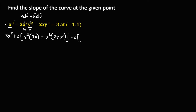Then minus 2 times the derivative of x — this one is u — and y to the power 3, this one is v. So using this formula, we have v, that's y to the power 3, times the derivative of x, that's 1, then plus u, so u is x, times the derivative of v, this one is 3y to the power 2 times y prime.